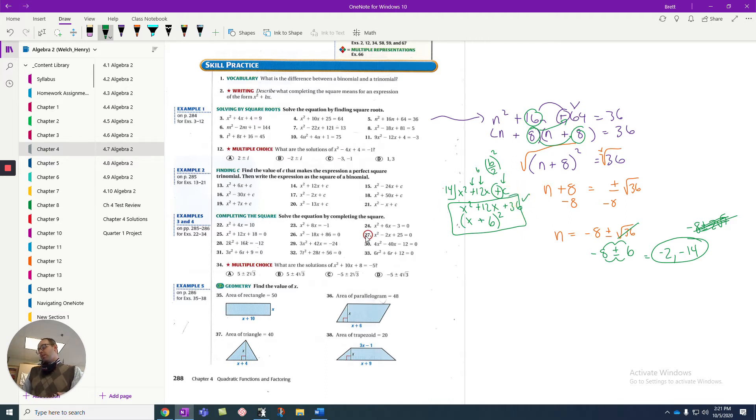Occasionally, you will bump into problems that aren't as nice. Specifically, when the b value is odd. Let's look at 19 real quick. If I use 19, it's x squared plus 7x plus c. Well, the rule is I'm supposed to take half of the 7, which would be 7 over 2. I'm not going to do this as a decimal. But then I would want to square that.